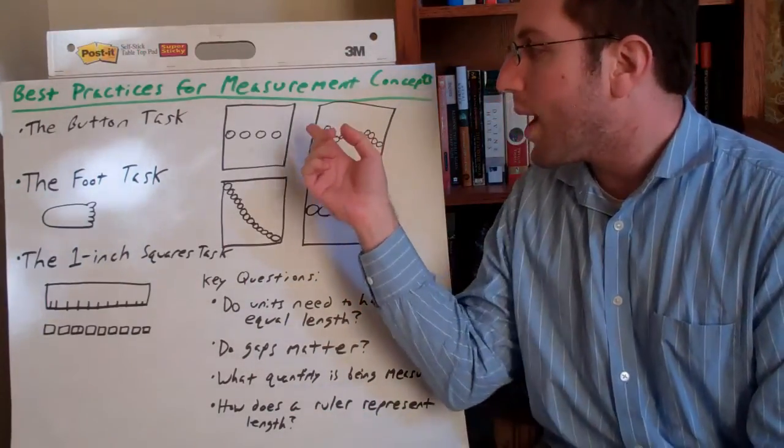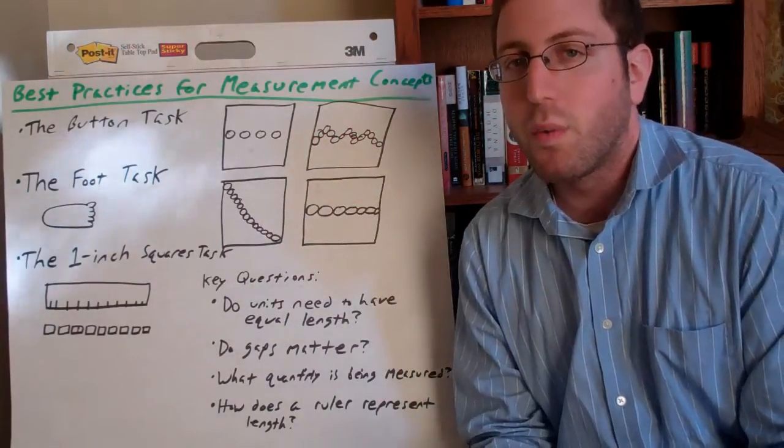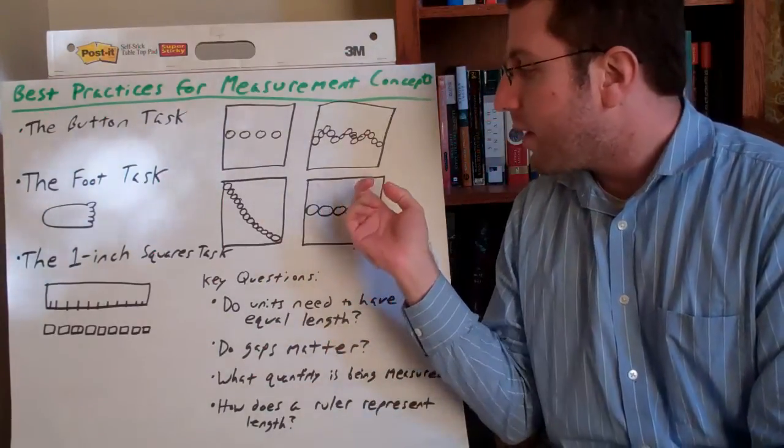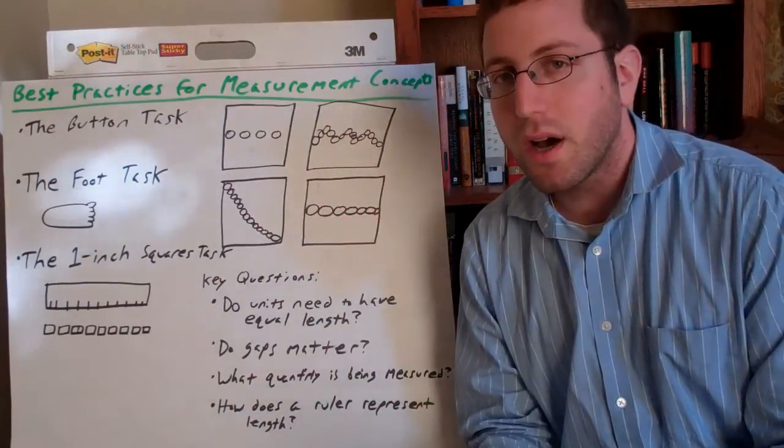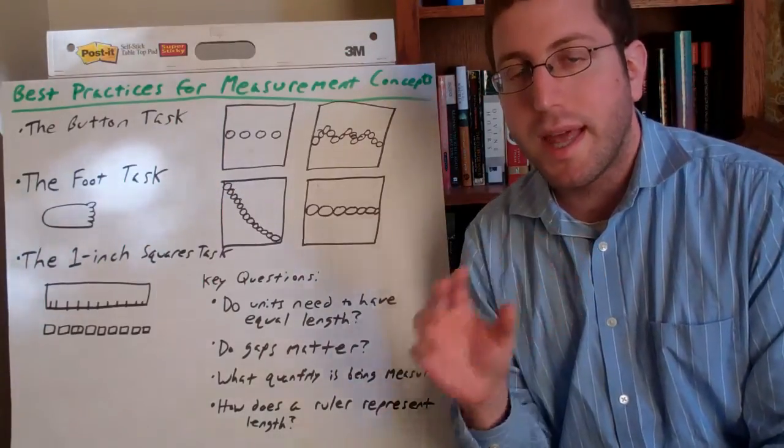Which is the best way to measure that sheet of paper and why? And that forces students to say that the correct answer works because you're measuring the right attribute. You're measuring the length.